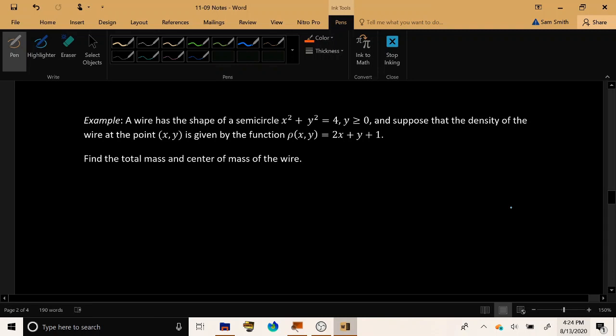A wire has the shape of a semicircle, x squared plus y squared equals 4, y greater than or equal to 0. Suppose that the density of the wire at the point x, y is given by the function rho of x, y equals 2x plus y plus 1. Find the total mass, and then let's find the center of mass.